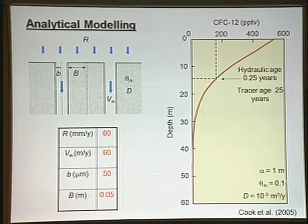This is just a generic hypothetical simulation. We've simulated for a matrix porosity of 10 percent, a certain value of diffusion coefficient. We've simulated a water velocity through the fractures, Vw, of 60 meters per year and looked at what CFC concentrations would look like in that hypothetical system. That's what's shown on the right.